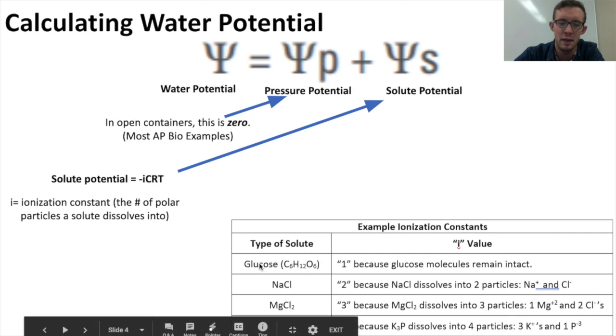To give you an example, sugar molecules would have an I value of 1 because when sugar molecules dissolve, they don't break apart into separate ions. Whereas table salt, sodium chloride, would have an I value of 2 because sodium and chlorine dissolve into two separate particles, a positive sodium ion and a negative chlorine ion.